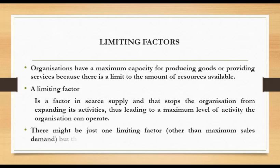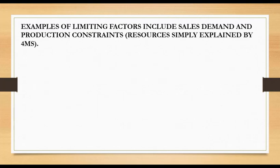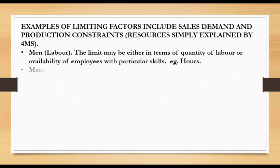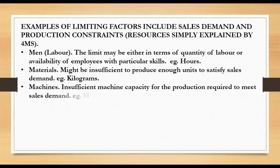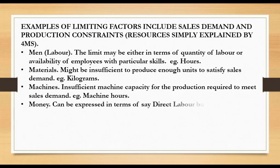A limiting factor is simply a resource. Resources are normally explained as four M's. The first M means men — by men, we mean labor, so labor hours may not be sufficient. Then materials — the second M — materials may not be enough, let's say kilograms. Then we have machines; you might have insufficient machine capacity, let's say in terms of hours. And then we have money — all resources consume money, so maybe the direct labor budget might be limited, direct materials budget could be limited.